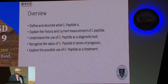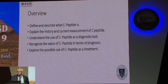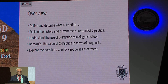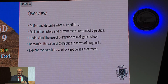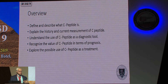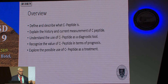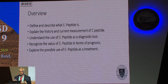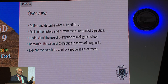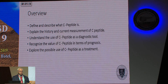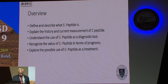A few objectives we're going to talk about: we're going to define and describe what C-peptides are, explain their history and how they became available, understand how they can be used as a diagnostic tool, maybe also as a prognostic tool, and find out if there's some value for C-peptide beyond just being a marker — perhaps in preventing cardiovascular or microvascular disease as a treatment.